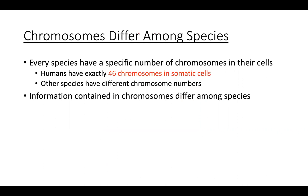Normal humans have exactly 46 chromosomes in our somatic cells — write that down. Somatic cells are all cells in our bodies apart from our sex cells. Other species have different chromosome numbers, and also the information contained on these chromosomes can differ depending on the species.